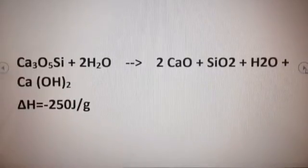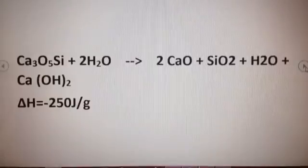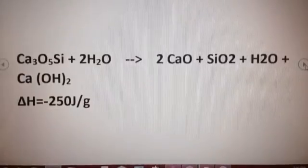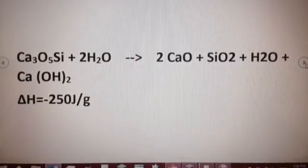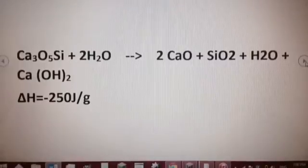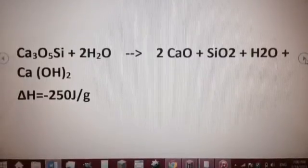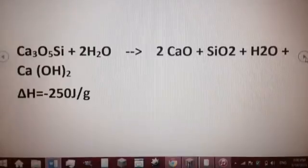Tri-calcium silicate plus water creates two calcium oxide atoms plus silicon oxide atoms plus water and calcium hydroxide. Also releases about 250 joules per gram of energy.